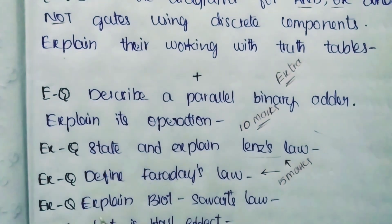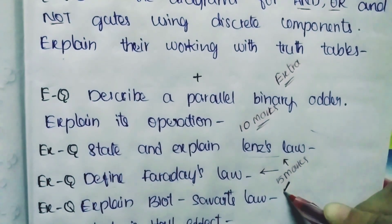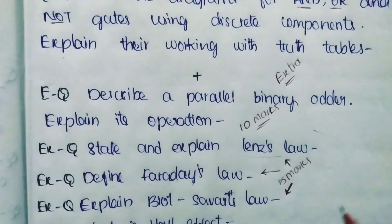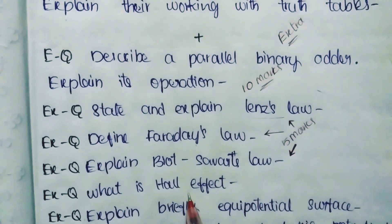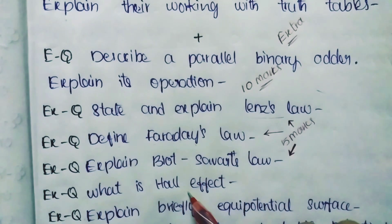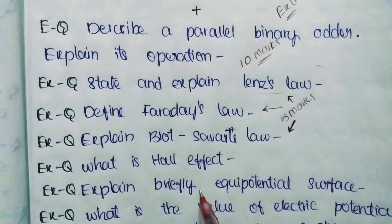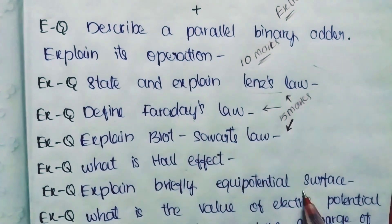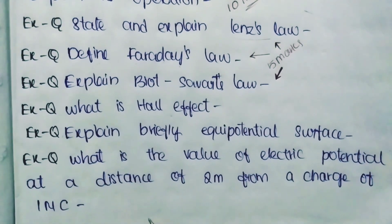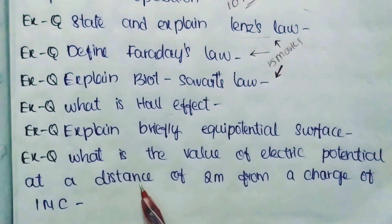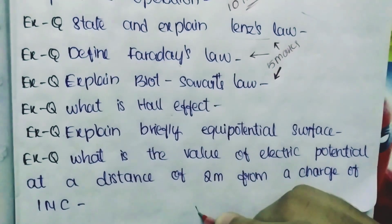Extra Question Number 4: Explain Biot-Savart's Law - again a 5-mark question. Hall Effect is already in the 15 important questions. Extra Question Number 5 (Number 6): Explain briefly equipotential surface - also a 5-mark question. Extra Question Number 7: What is the value of electric potential at a distance of 2 meters from a charge of 1 microcoulomb? This is a 10-mark question.